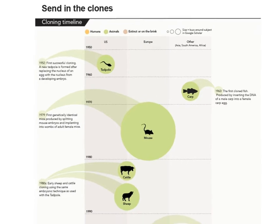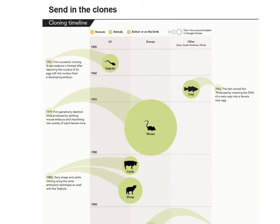The next significant cloning event was a fish, cloned by inserting the DNA of a male carp into a female carp egg using a different technique. Then the first mouse was cloned in 1979 by splitting mouse embryos — similar to how identical twins are made — and implanting them into the wombs of adult female mice, creating identical twins artificially.